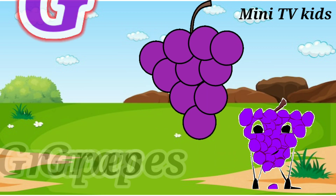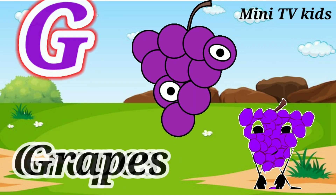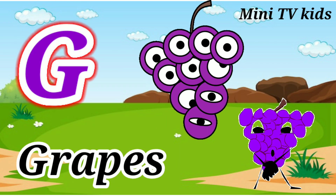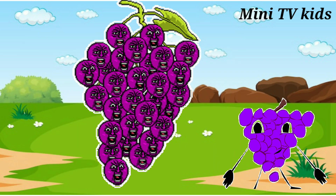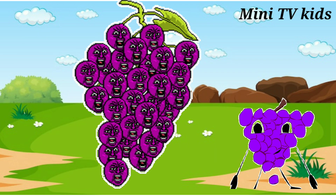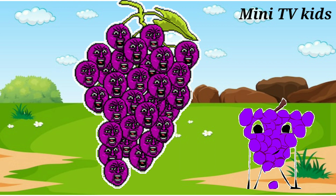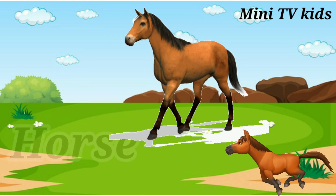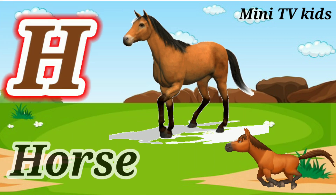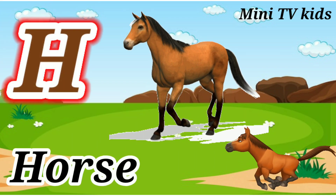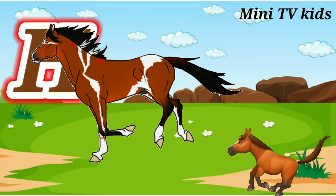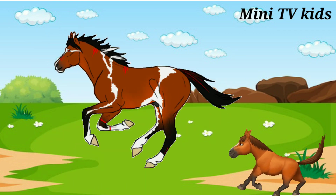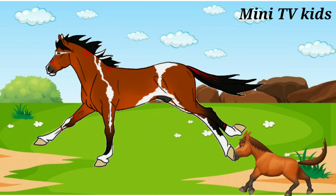G for Grape. Grape means Angola. H for Horse. Horse means Gola.